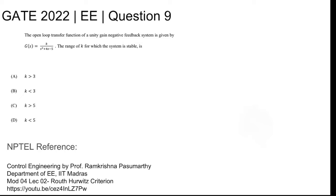This is GATE 2022 electrical question number 9. The open loop transfer function of a unity gain negative feedback system is given by G(s) = k / (s² + 4s - 5). The range of k for which the system is stable is being asked.